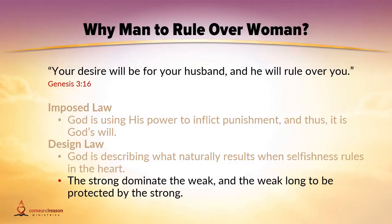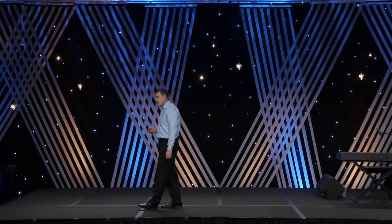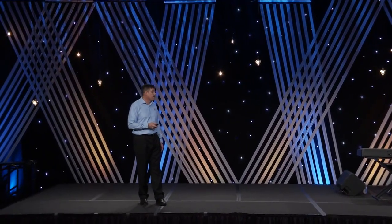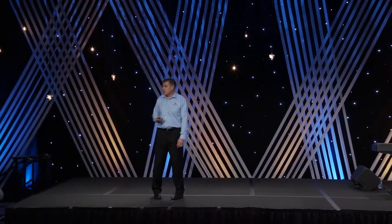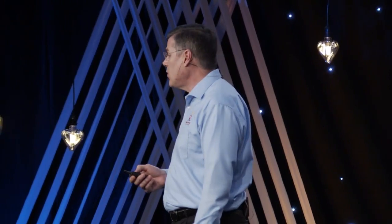Under design law, God is simply describing or diagnosing the natural results when love is displaced and fear and selfishness is written in. When love is displaced and fear and selfishness now reside in the heart, what's the natural outcome? The strong will dominate the weak, and the weak will seek to be protected by the strong. God said: now that this has happened and you do not love others more than self, your fear is going to lead you to seek protection from him, and his insecurities and fear are going to lead him to dominate and control you. The history of the human race has validated that diagnosis.